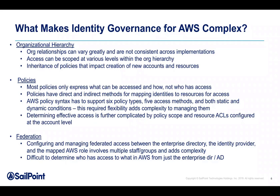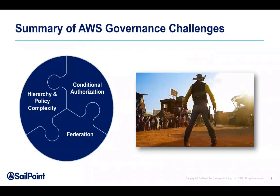The policies can be complex — there are lots of kinds of policies, and they can come from other applications, not necessarily just AWS. Federation can be a little bit challenging as well, so we need to make sure we're gathering identity information via the federated environment and applying it appropriately to the right identities on our backend. In general, the three areas where AWS governance is very different from most other applications are: hierarchy and policy complexity, conditional authorization, and federation.